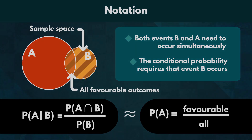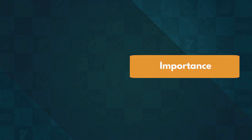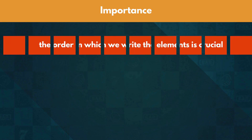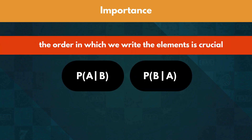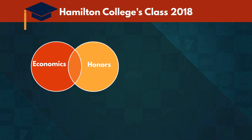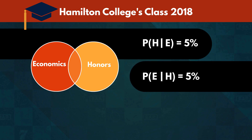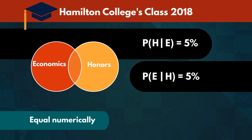Once we know the intuition behind the formula, we can focus on the importance of conditional probability. Try to remember that the order in which we write the elements for the conditional probability is crucial. P of A given B is definitely not the same as P of B given A, even if the numeric values are equal. For instance, let's explore the characteristics of Hamilton College's class of 2018. 5% of the students who got a degree in economics graduated with honors. At the same time, 5% of all students who graduated with honors completed a concentration in economics. These two statements might have the same conditional probability, but they hold completely different meanings.